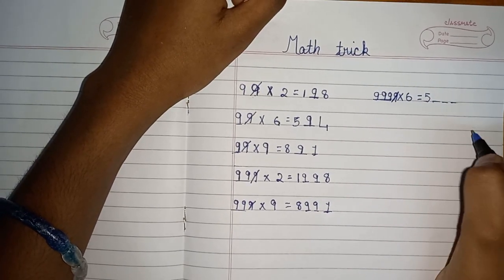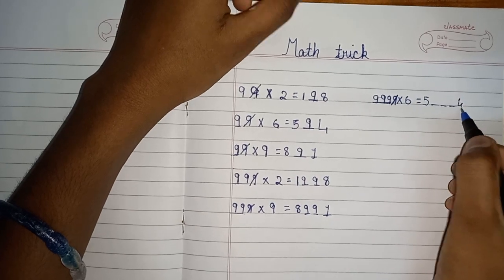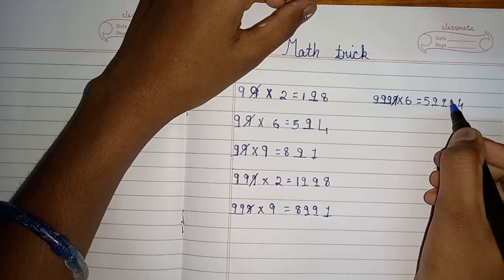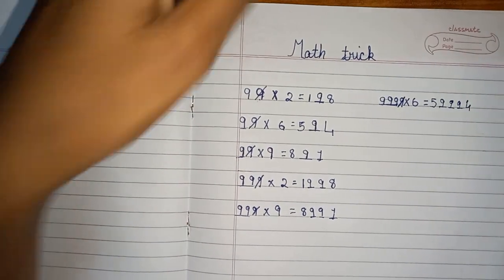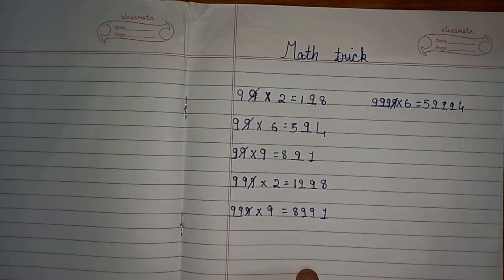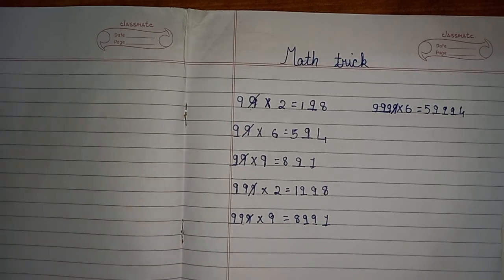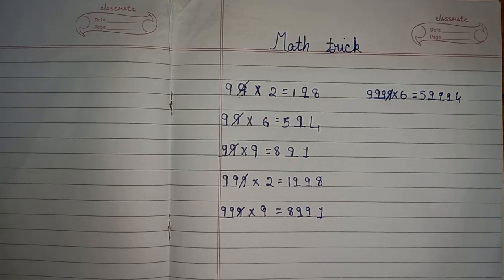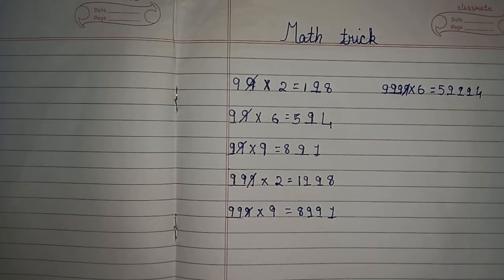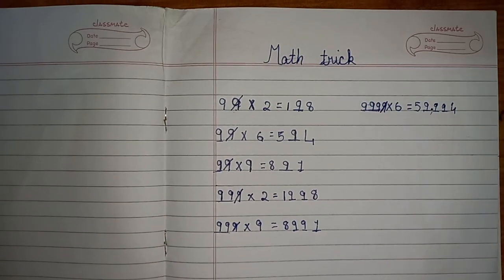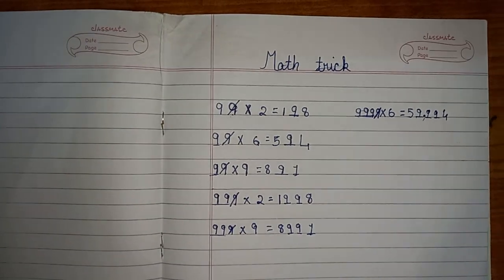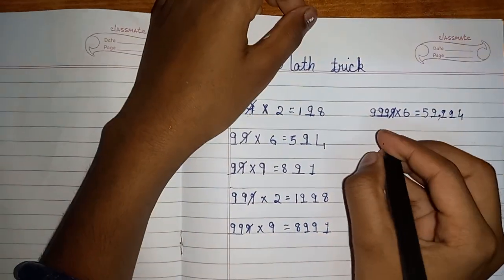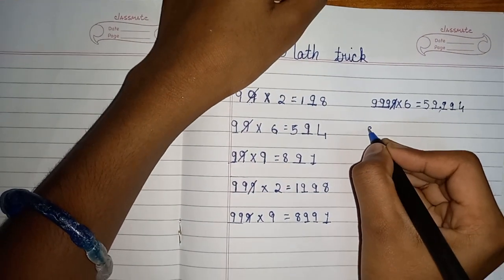Now pulling in the remaining digits — nine, nine, nine — filling those three blanks. The answer for 9999 multiplied by 6 is equal to 59994. What a big number!